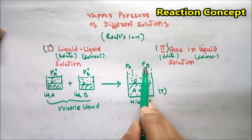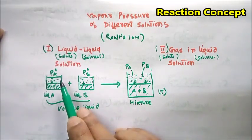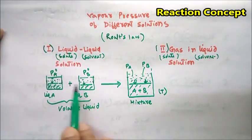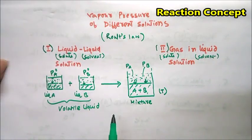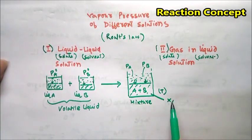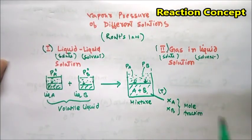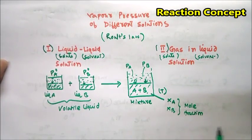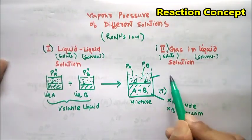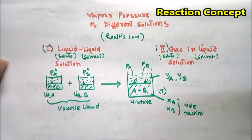Now we mix both liquids and get a mixture of A and B, which is a liquid-liquid solution. At a certain temperature, since both liquids are volatile, they will undergo vaporization, and at equilibrium these components exert some vapor pressure on the liquid surface. Suppose the vapor pressures of components A and B in the mixture are PA and PB. The mole fractions of component A and B in the solution phase are xA and xB, and in the vapor state the mole fractions are yA and yB.